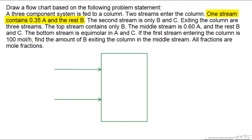One stream contains a mole fraction, because at the end it says all fractions are mole fractions, of 0.35A. So there's more than one way to write mole fractions, and some people understand it a little bit better if we write it as 0.35A is the same thing as writing 0.35 moles of A per mole of feed.